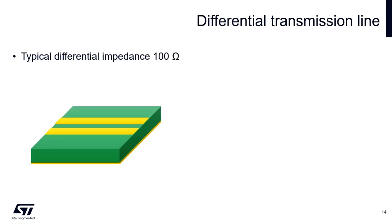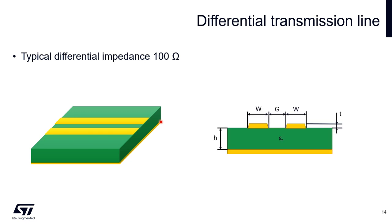Another type of RF transmission line which is typically used in designs with STM32WL is differential transmission line. It consists of two parallel traces, and the ground plane below. Typical impedance of this transmission line is 100 ohms. Here we can see it in the cross section. Parameters that affect the characteristic impedance are width of the traces, gap between the traces, thickness of conductor, and height of the substrate. The dielectric constant of the substrate has also impact.